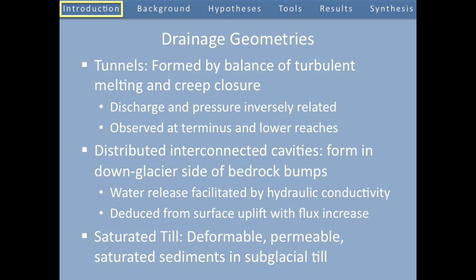That is, if we have a large tunnel with a large amount of water going through it, it will have a lower pressure than a smaller tunnel with a smaller amount of water going through it. These subglacial tunnels have been observed at the terminus and lower reaches of glaciers and ice sheets, and dye experiments often show that water near the terminus is primarily routed through subglacial tunnels.